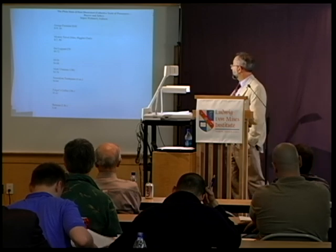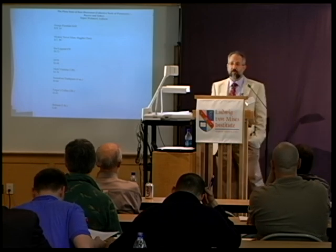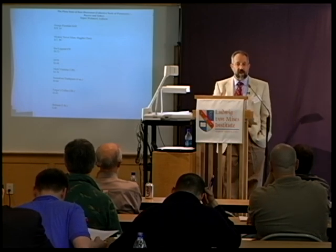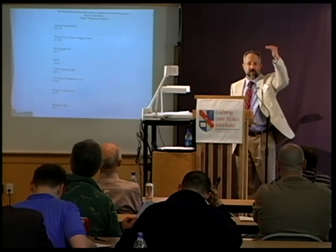I bought a pound of Folgers coffee — just one pound, no more — and a pound of bananas. Why didn't I buy the second pound of bananas for $0.48? Because I ranked the $0.48 above the second pound of bananas. Why didn't I buy a fourth DVD? Because I ranked the $4.88 above the DVD.